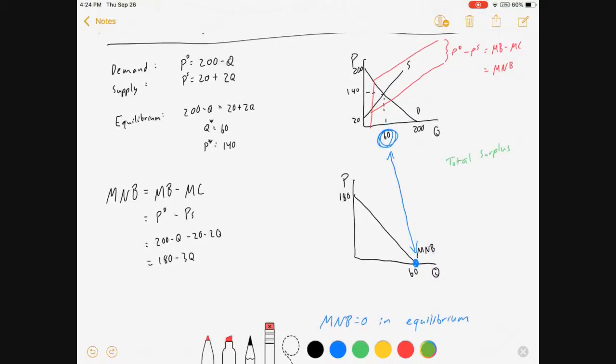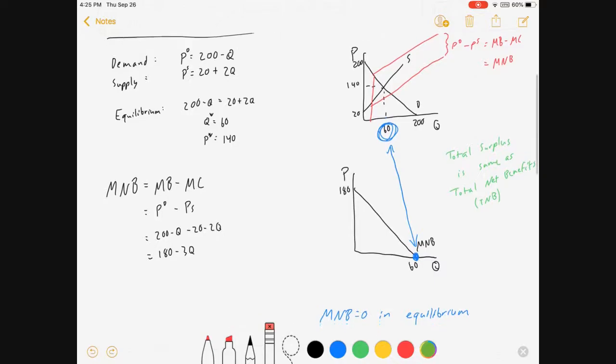And one thing I did not mention is that total surplus in a lot of our models is the area between curves. In this case, we're going to use some different words for it. But it's the same thing as total net benefits or TNB. So these net benefits are basically the same thing as how much you would add to consumer and producer surplus put together. And total net benefits would be a measure of consumer and producer surplus.